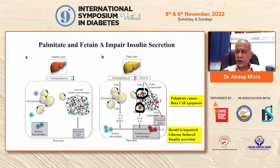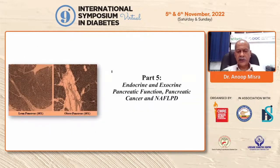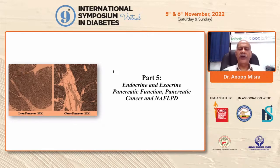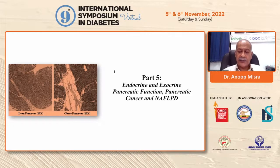Palmitate also causes beta cell apoptosis. The result is devastating: defective insulin secretion, insulin resistance, and increased blood glucose. Both endocrine and exocrine pancreatic function may be affected by pancreatic fat, and there is a chance these patients may develop pancreatic cancer as well.